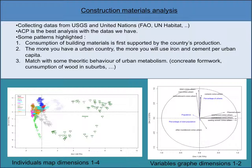PCA is the most appropriate choice since there are only quantitative values. When there are different types of categories, such as import or export values for all countries and resources, then MFA — Multiple Factor Analysis — could be better. Here, the PCA is very accurate and highlights a few theoretical facts about urban metabolism.